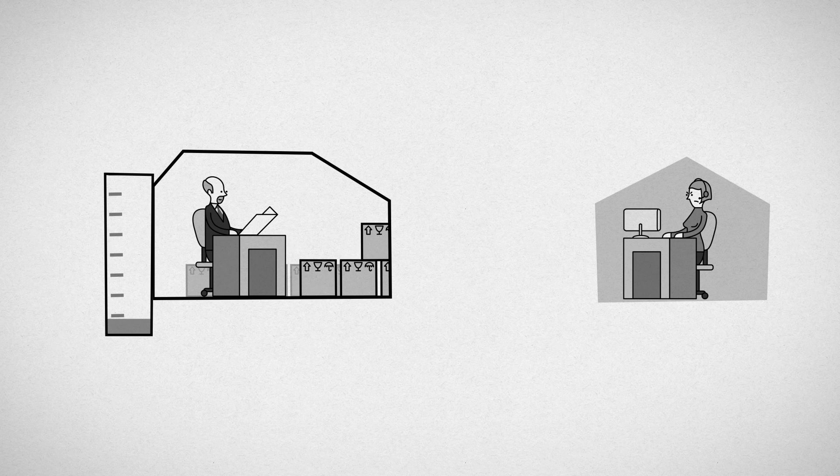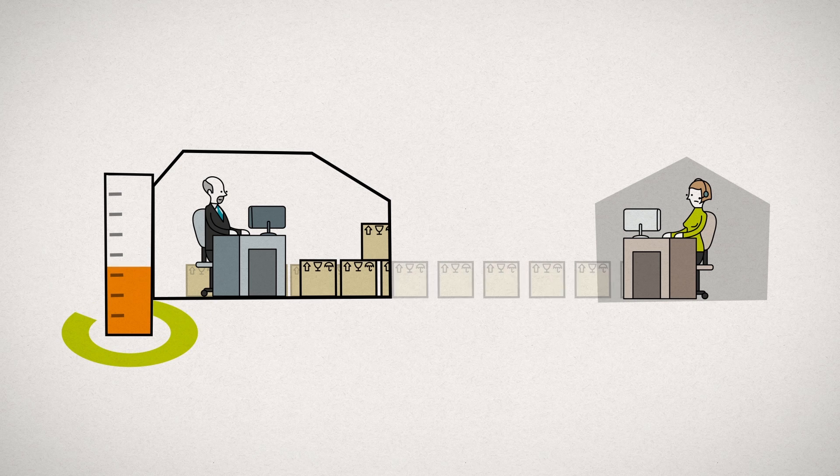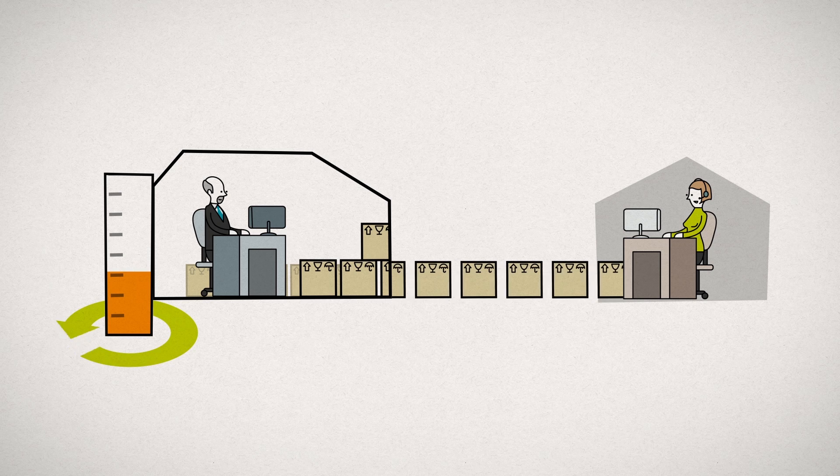After realizing his mistake, Mr. Fisher decided to optimize his inventory levels. Using a specialized software system, he was able to keep his inventory low while at the same time meeting the requirements of the customers at the end of the supply chain.